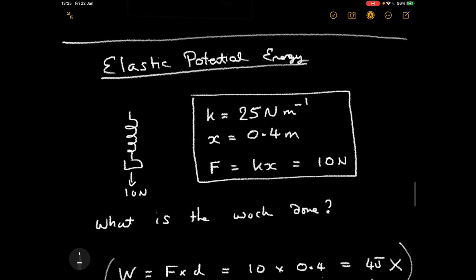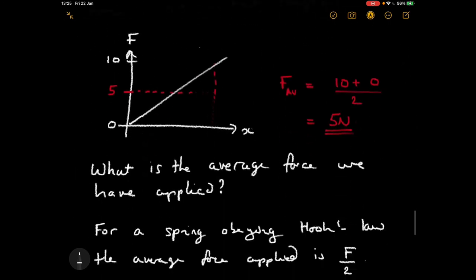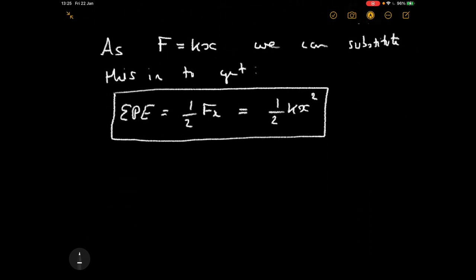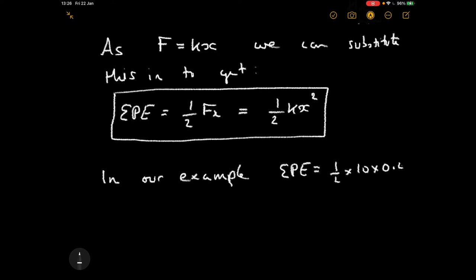Returning to our example: we had a final force of 10 newtons and an extension of 0.4 metres. The elastic potential energy is a half times 10 times 0.4, which equals two joules of elastic potential energy stored in that spring.